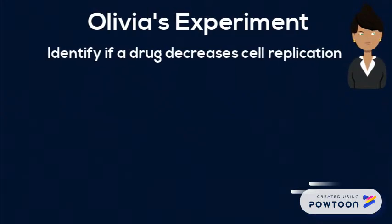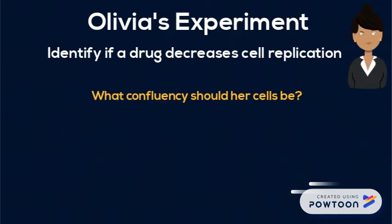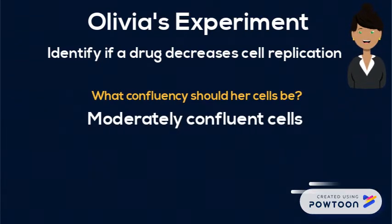In another scenario, an experiment looks to see if a particular drug decreases a cell culture's growth and replication. Moderately confluent cells in log phase should be used, because they are growing at a constant and fast rate.